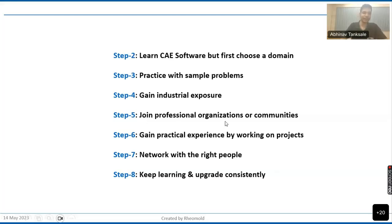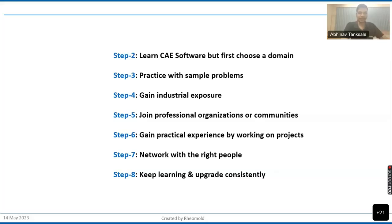Step five is to join professional organizations or communities. Just as you join groups around personal interests, there are professional organizations made for engineers. SAE — the Society of Automotive Engineers — is one such community. Others include ASME and MSME, the Society for Mechanical Engineers. You can search for these on Google, join them, attend their events, and connect with people. Then move on to step six: gain practical experience by working on projects.